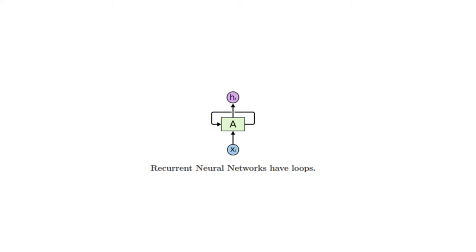These loops make recurrent neural networks seem kind of mysterious. However, if you think a bit more, it turns out that they aren't all that different than a normal neural network. A recurrent neural network can be thought of as multiple copies of the same network, each passing a message to a successor. Consider what happens if we unroll this loop.